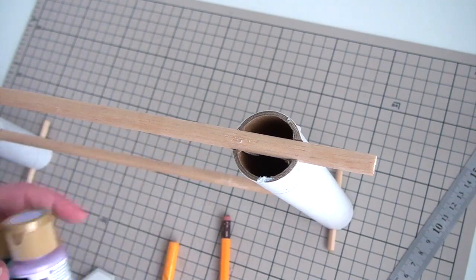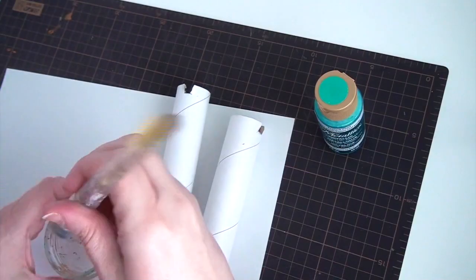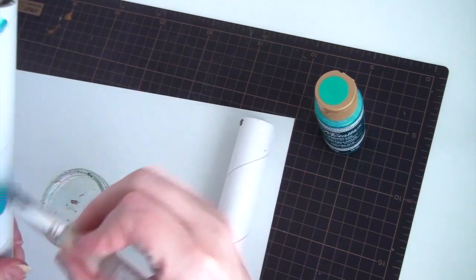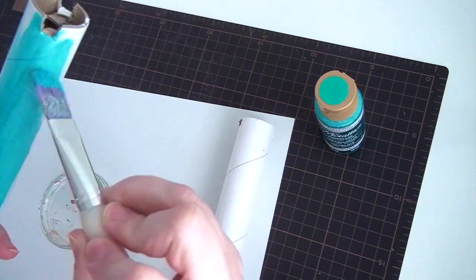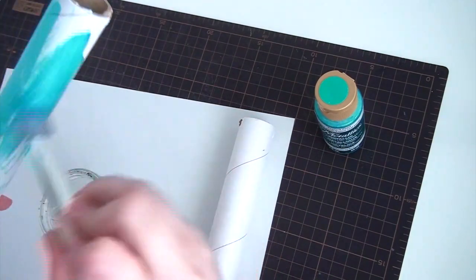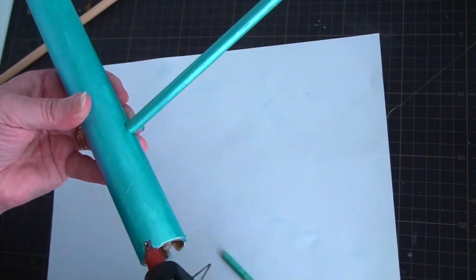Take everything apart again and then take all the parts that you want to color. Spray paint it or use acrylic paint and let everything dry well. Lastly glue everything together with hot glue and let it dry. And you're done!